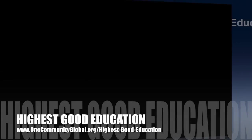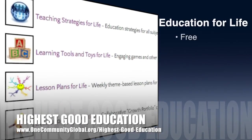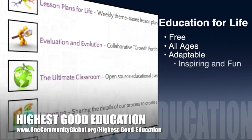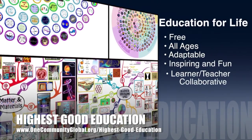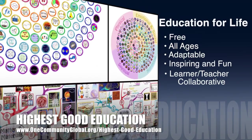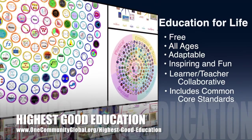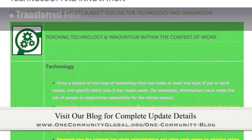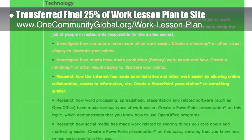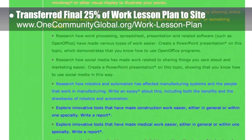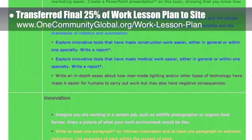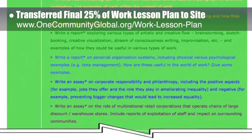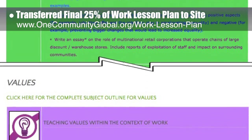OneCommunity's approach to highest good education is open-source and free-shared, designed for all age groups, adaptable to any schooling environment, inspiring and fun for all participants, a learner-teacher collaborative, and it includes U.S. Common Core standards. This last week, the core team transferred the final 25% of the written content for the work lesson plan to the website. This lesson plan, purposed to teach all subjects to all learning levels in any learning environment using the central theme of work, is now 100% complete on our website.